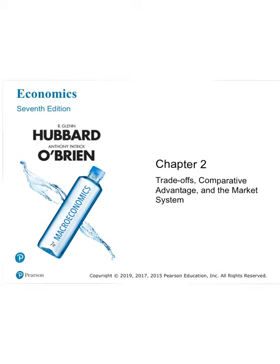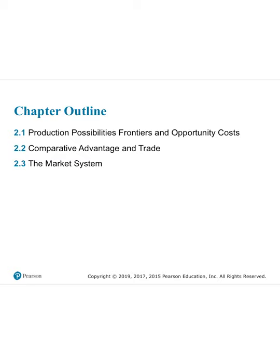This is chapter two of Glenn Hubbard's and Anthony Patrick O'Brien's Economics, the seventh edition. We will talk about trade-offs, comparative advantage, and the market system. We will start with the production possibilities frontier, which illustrates opportunity costs, and then talk about comparative advantage and trade in the market system.